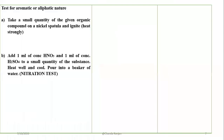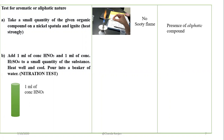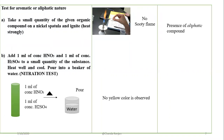Then we will determine the aliphatic and aromatic nature. We take the sample on a spatula and heat it directly over a flame — it showed no sooty flame, so it can be an aliphatic compound. We also performed the nitration test by adding HNO3 and H2SO4, heating, and pouring into water. Since the color did not change to yellow, it is an aliphatic compound, as aromatic compounds give a yellow color.